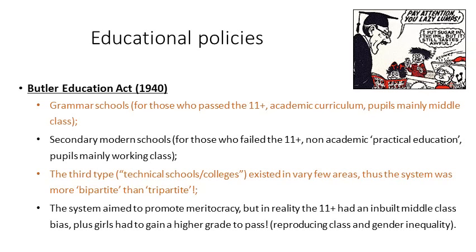There was a third type of school — technical schools or technical colleges — but these weren't very well funded by the state and so existed in very few areas. These were for students, a mixture of middle-class and working-class, who had perhaps passed the eleven-plus but were more interested in a hands-on education, perhaps with a view to becoming an engineer or working in construction. Because so few of these schools existed, sociologists have argued that the tripartite system was in fact a bipartite — or two-part — system. The system aimed to promote meritocracy, but in reality the eleven-plus had an in-built middle-class bias, and girls had to gain a higher grade to pass, thus reproducing class and gender inequalities.